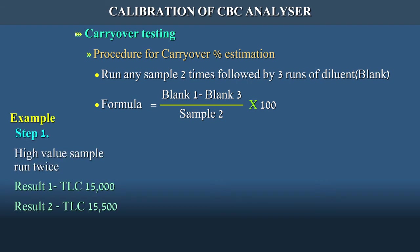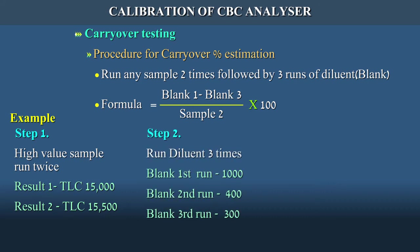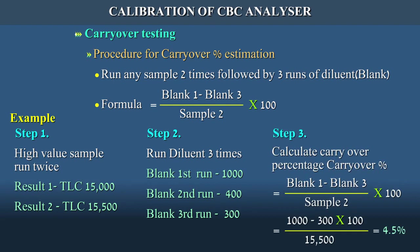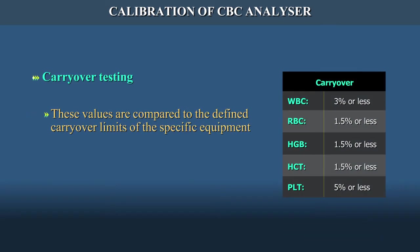Step 1: high value sample run twice — Result 1: TLC 15,000; Result 2: TLC 15,500. Step 2: run diluent 3 times — Blank 1st run: 1000; Blank 2nd run: 400; Blank 3rd run: 300. Step 3: calculate carryover percentage. Carryover percentage = (1000 − 300) / 15,500 × 100 = 4.5%. These values are compared to the defined carryover limits of the specific equipment.